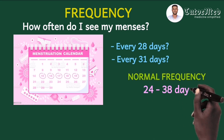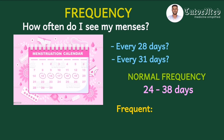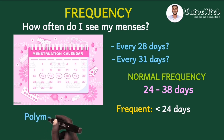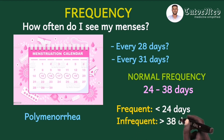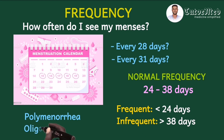Normal frequency is anything between 24 to 38 days. Menses is abnormally frequent when it occurs less than every 24 days — the old term was polymenorrhea, but we've stopped using that; now we say the menstrual period is abnormally frequent. Menses seen more than every 38 days is described as infrequent, and that is abnormal. The old term was oligomenorrhea, but it has been abandoned.